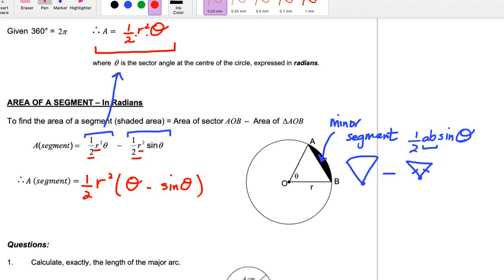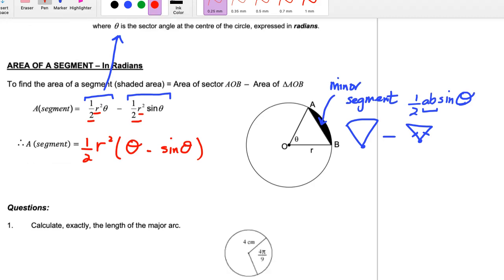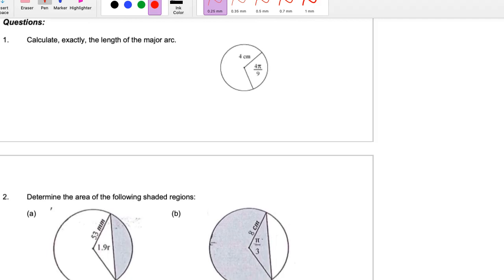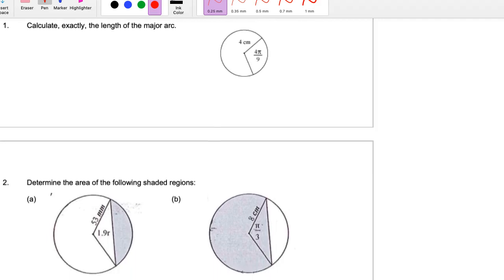So now we've readjusted our three main formulas. Let's have a look at some examples. In our first question, we're asked to calculate exactly the length of a major arc. So the major arc is this length I've highlighted in pink.